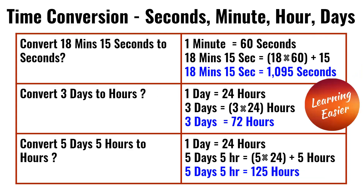Convert 18 minutes and 15 seconds to seconds. One minute is equal to 60 seconds. So 18 times 60 is 1,080. 1,080 plus 15 is 1,095. So 18 minutes and 15 seconds is equal to 1,095 seconds.